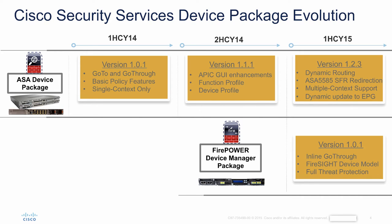To give you an overview of the evolution of the device packages, the ASA device package was released at FCS in the summer of last year with ACI fabric. We have progressed to offer today a quite rich and mature package of different services for the firewall into the fabric, comprised of both go-to layer three or go-through layer two insertion of the appliance, dynamic routing capabilities with L3 out in the fabric, firepower redirection for embedded firepower services in ASA, native multi-context support, and the feature called dynamic update in EPGs.